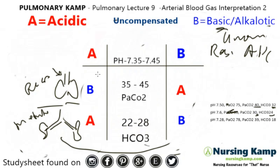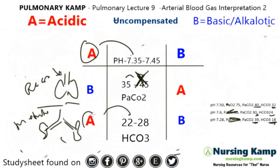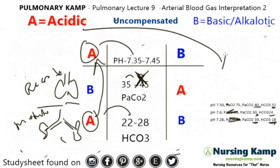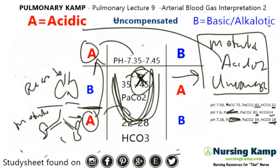The rule of thumb is: if you're circling two values that match and have one in the middle, it is uncompensated ABGs. Next example: pH is 7.28 — acidic. PaCO2 is 39 — right in the middle. HCO3 is 18 — less than normal. These two match. We have an acidic condition, and because it's in the metabolic area, this is metabolic acidosis. Because the PaCO2 is in the middle, it is uncompensated metabolic acidosis.